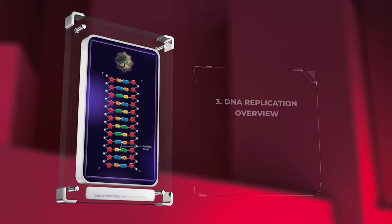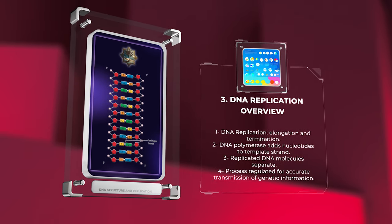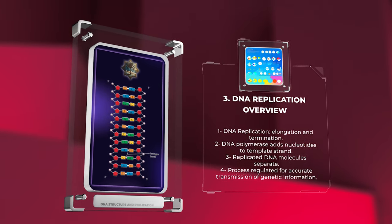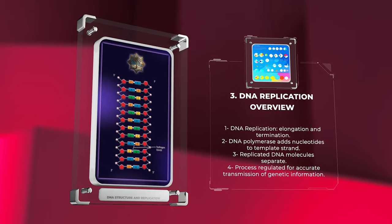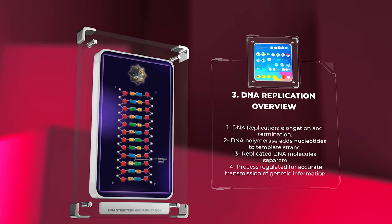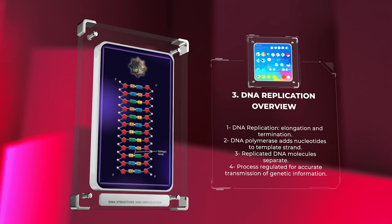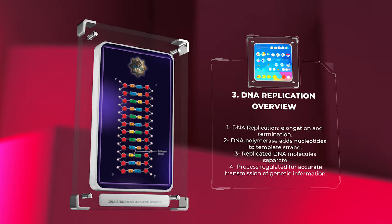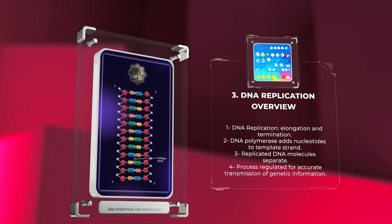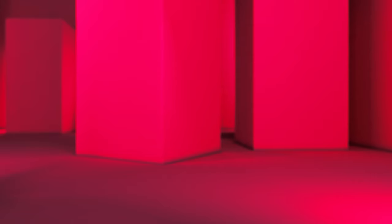In DNA replication, we focus on elongation, where DNA polymerase adds new nucleotides to the template strand, and termination, where the replicated DNA molecules separate. This process is tightly regulated to ensure accurate transmission of genetic information.